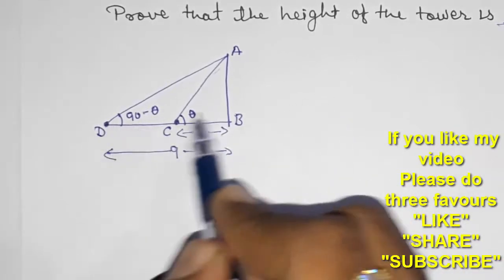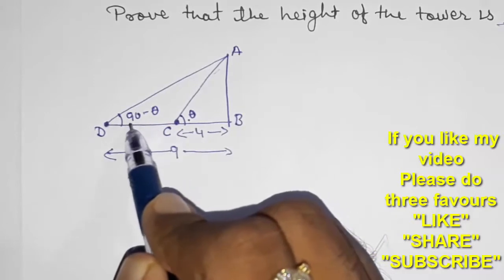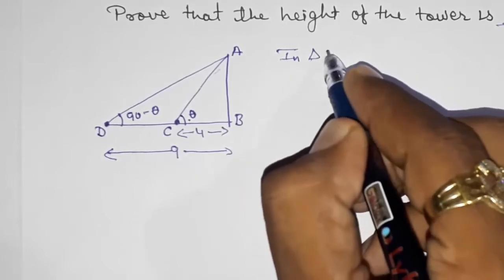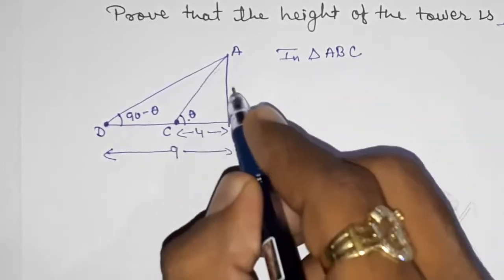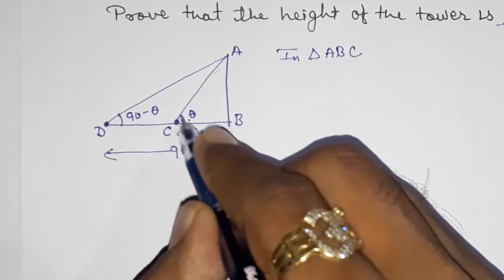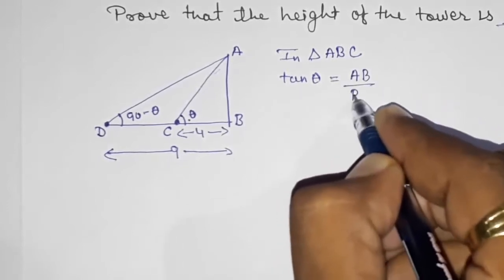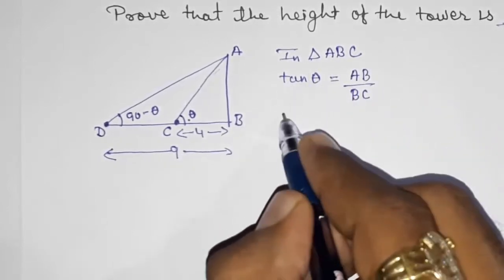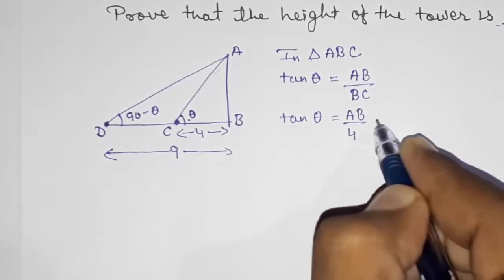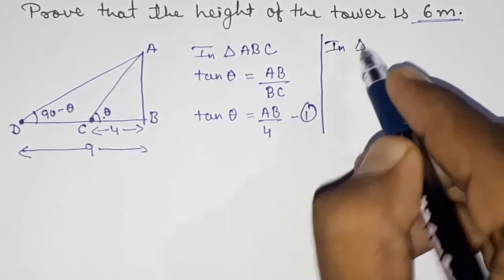This problem is a little bit tricky as they have not given us any perfect value — they said the angles are complementary, so take one as θ and another as 90 minus θ. In triangle ABC, tan θ equals AB upon BC, so tan θ equals AB upon 4. Take this as Result 1.